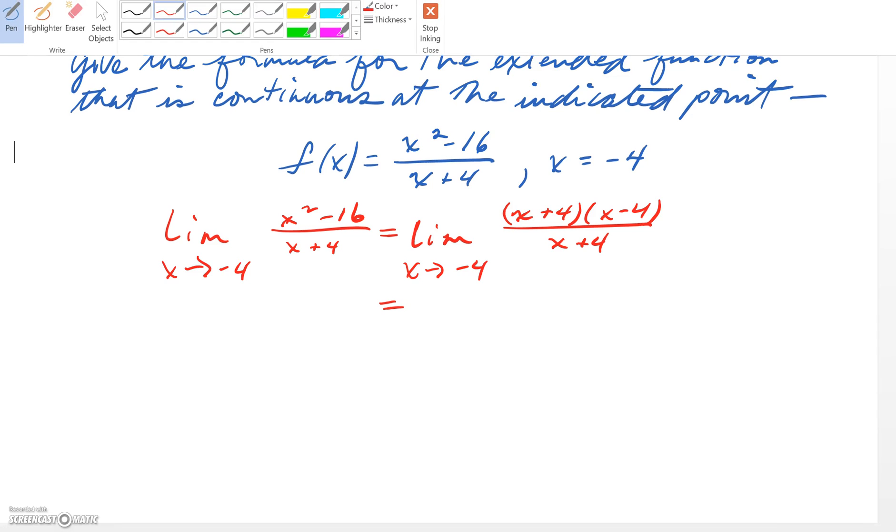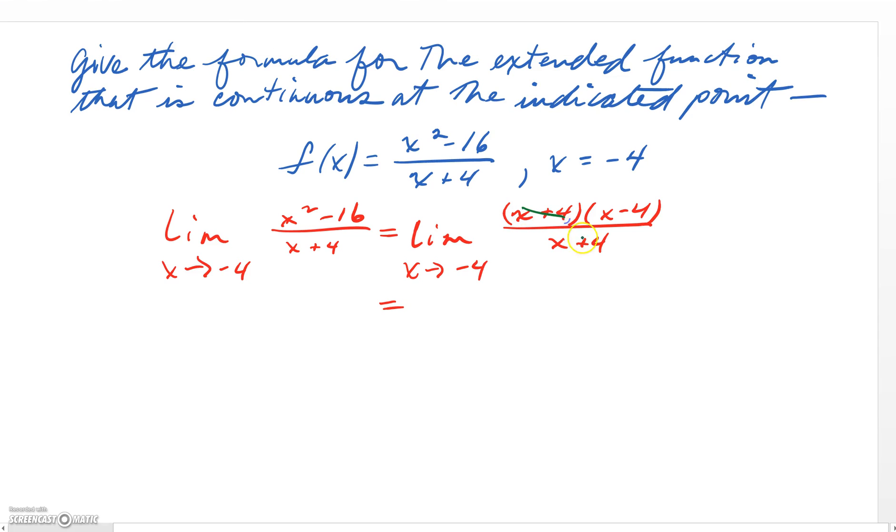And we're going to be able to divide these out as we evaluate this limit. And we'll get the limit as x goes to negative 4 of x minus 4. This limit can be evaluated quickly. We can substitute negative 4 in for x to get negative 4 minus 4, which is negative 8.